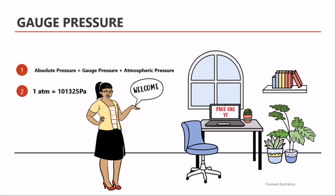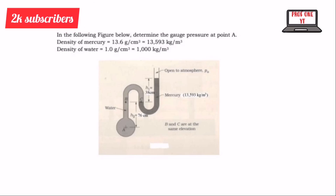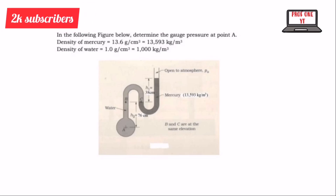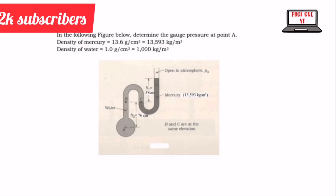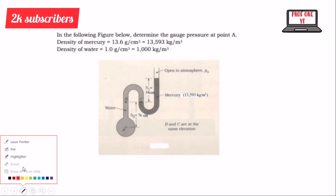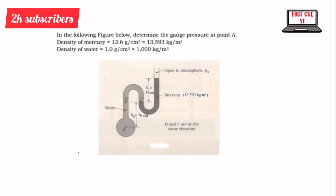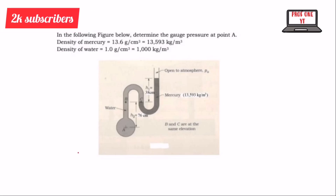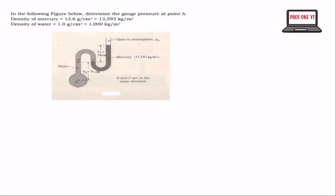We're going to take one example on gauge pressure. This is the example we are going to use to find the gauge pressure in a Newtonian fluid. We're finding the gauge pressure at point A.